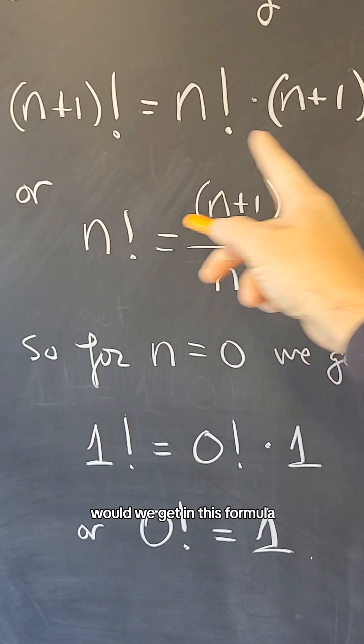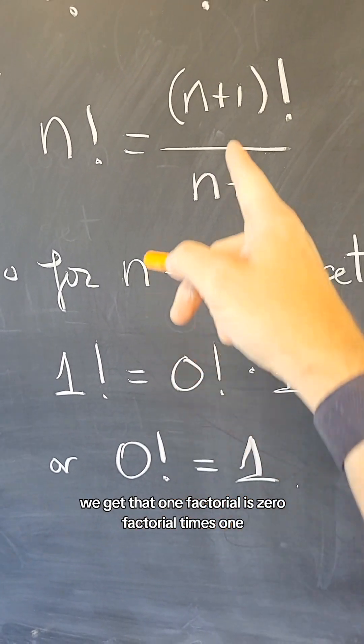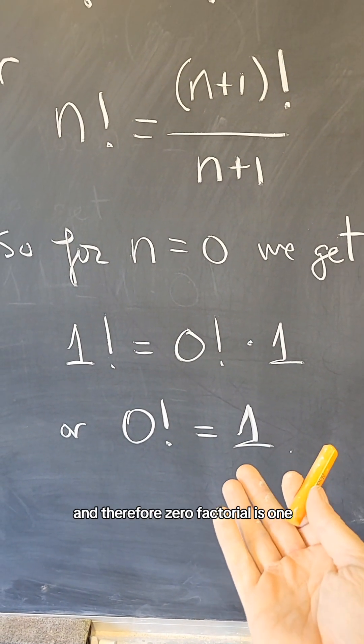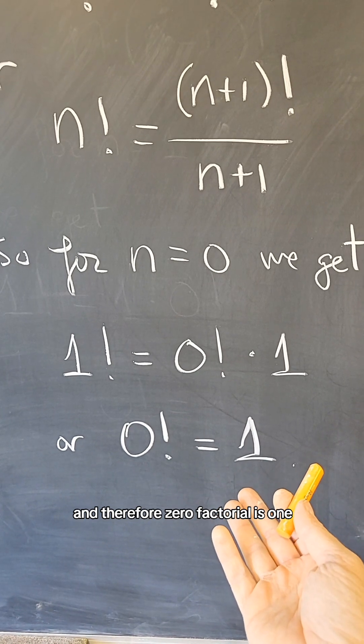what we get in this formula, we get that 1 factorial is 0 factorial times 1, or in this formula that 0 factorial is 1, and therefore 0 factorial is 1, right?